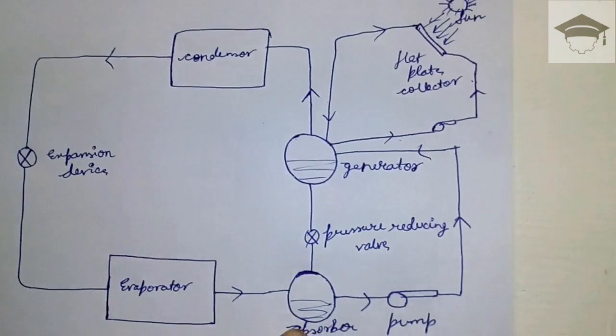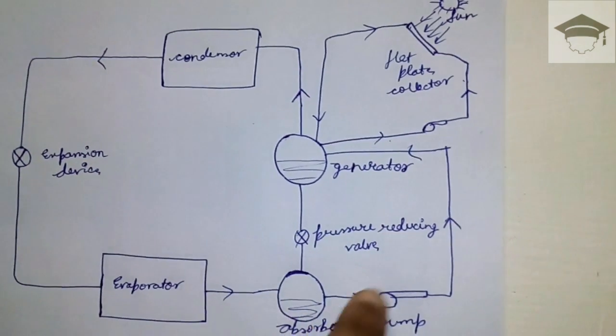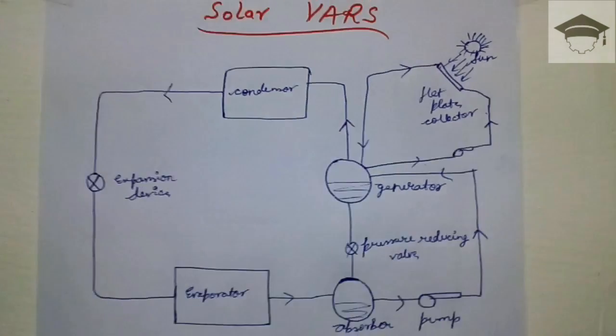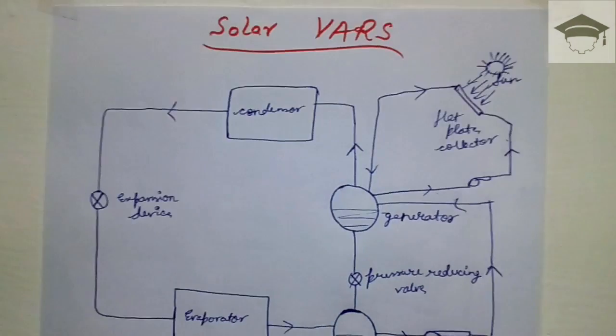The solar energy is used efficiently in the generator. We have reduced the work input to the cycle, and hence the COP increases.